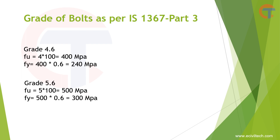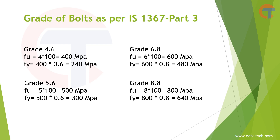Similarly, for 5.6 grade: the number before the decimal is 5, so 5 × 100 = 500 MPa, which is the ultimate tensile stress. Multiply 500 by 0.6 to get 300 MPa, which is the yield strength. You can use the same method to calculate for 6.8 grade and 8.8 grade.